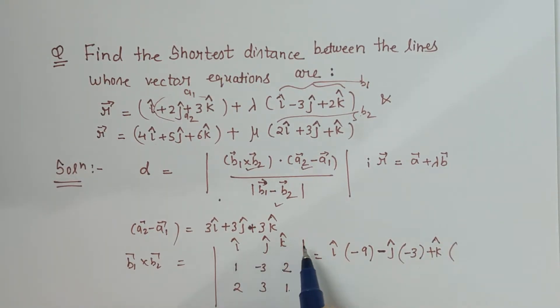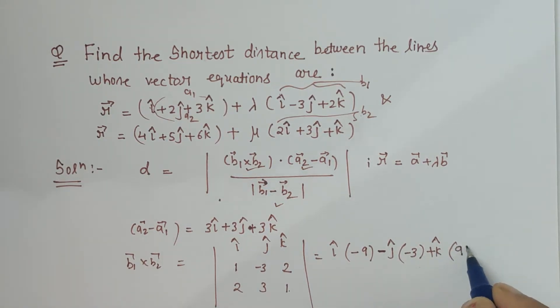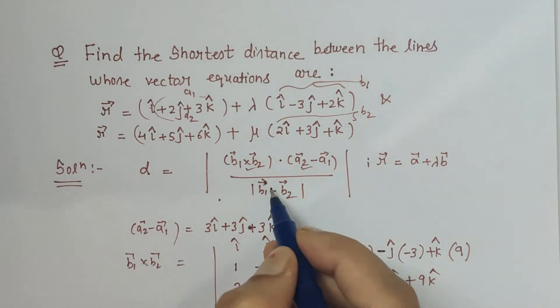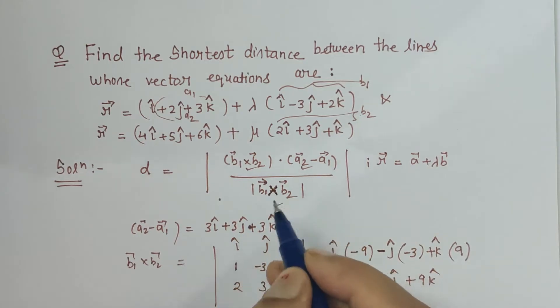Plus k cap times eliminate its row and eliminate its column, so this into this minus this into this, that is 3, minus is already there so it will become plus, so 3 plus 6 is 9. So the result is minus 9 i cap plus 3 j cap plus 9 k cap. This is b1 cross b2.